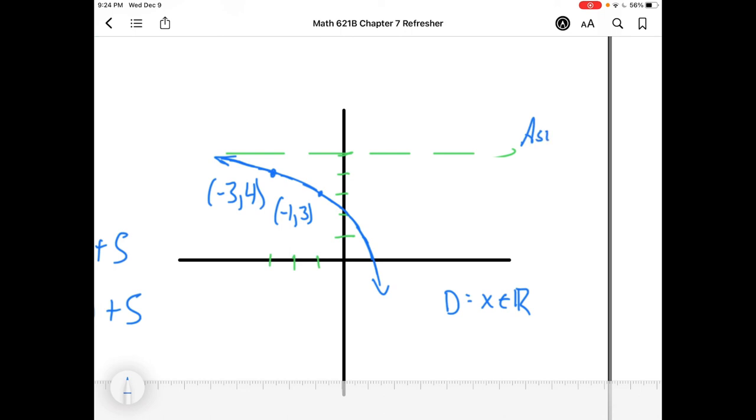If I wanted to talk about the domain and range of this function, the domain's all real numbers because that's the case for all exponential graphs. The asymptote is a horizontal line, so it's the horizontal line y equals 5. And just by looking at this, the range is y is less than 5. The y values will always be less than 5 because they're never going to cross that asymptote.